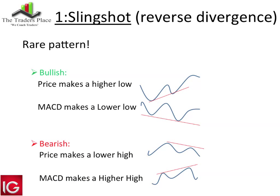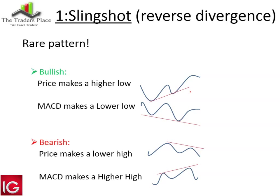The slingshot, or reverse divergence, is a reasonably rare pattern. How it works: the price makes a higher low while the MACD makes a lower low. You don't see that too often, but when it happens it's often a pretty decent trade. On the bearish side, price makes a lower high while the MACD makes a higher high. It basically shows that price is not confirming the MACD momentum. Price will probably lead. This is the opposite of normal divergence.